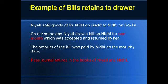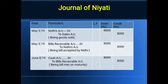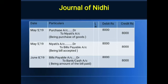Now we have one example. With the help of this example, all the conditions will be cleared. Niyati sold goods worth 8,000 on credit to Nidhi. This is the first transaction. We have two books for the transactions. On 5th May, Niyati sold the goods to Nidhi, so in Niyati's books the entry is: Nidhi account debit to Sales account. The second entry is in the books of Nidhi because Nidhi is purchasing the goods, so the entry is: Purchases account debit to Niyati account.